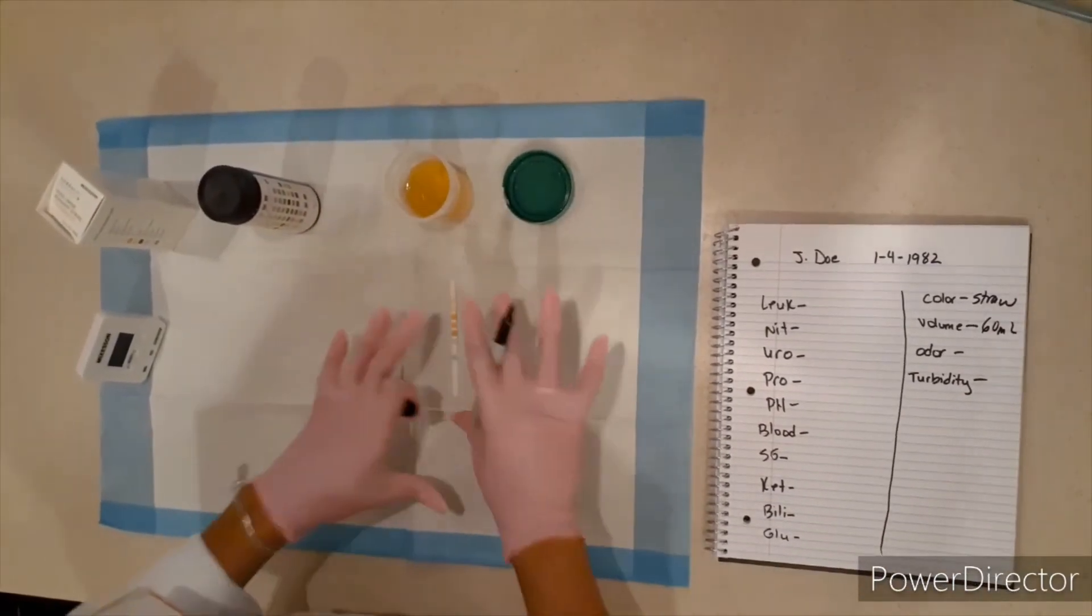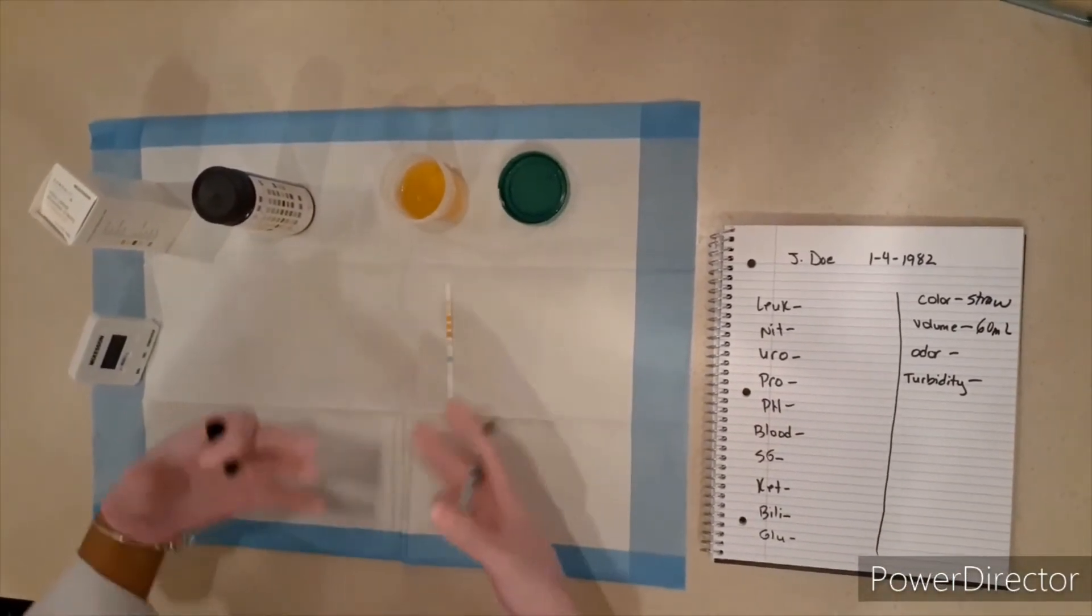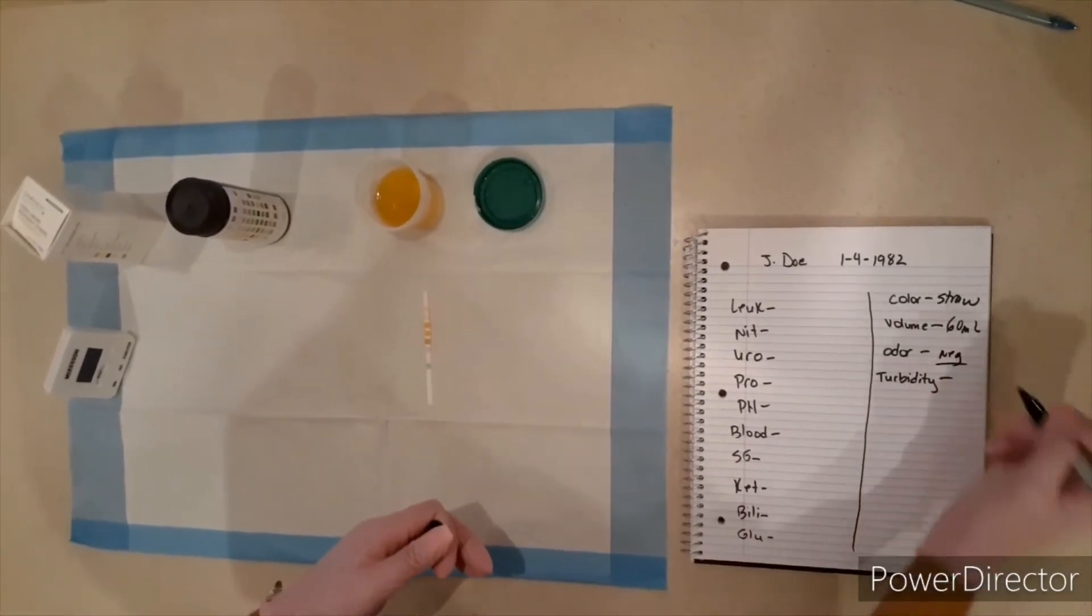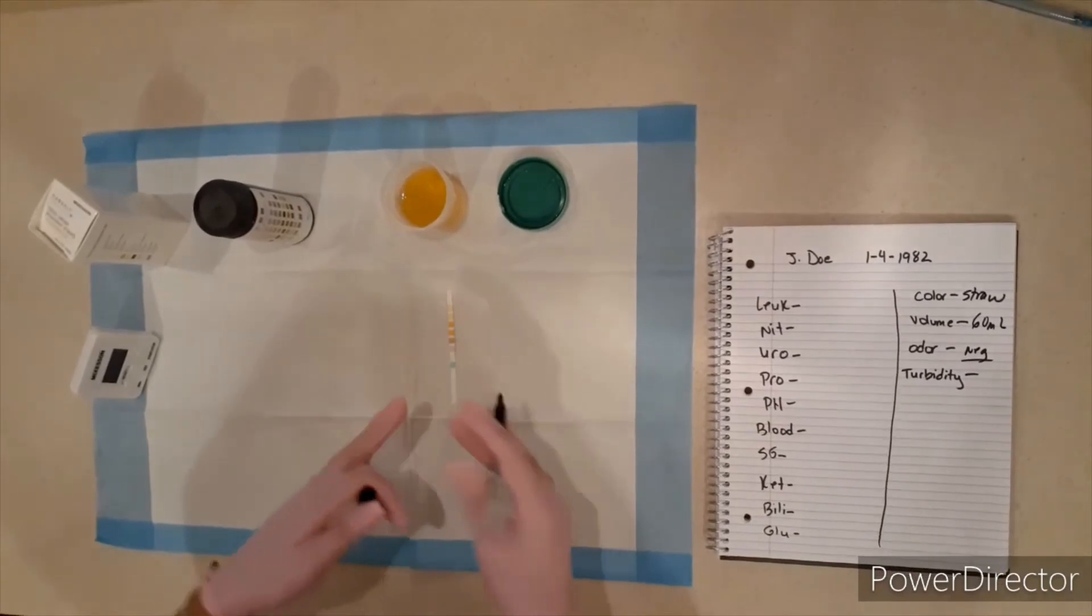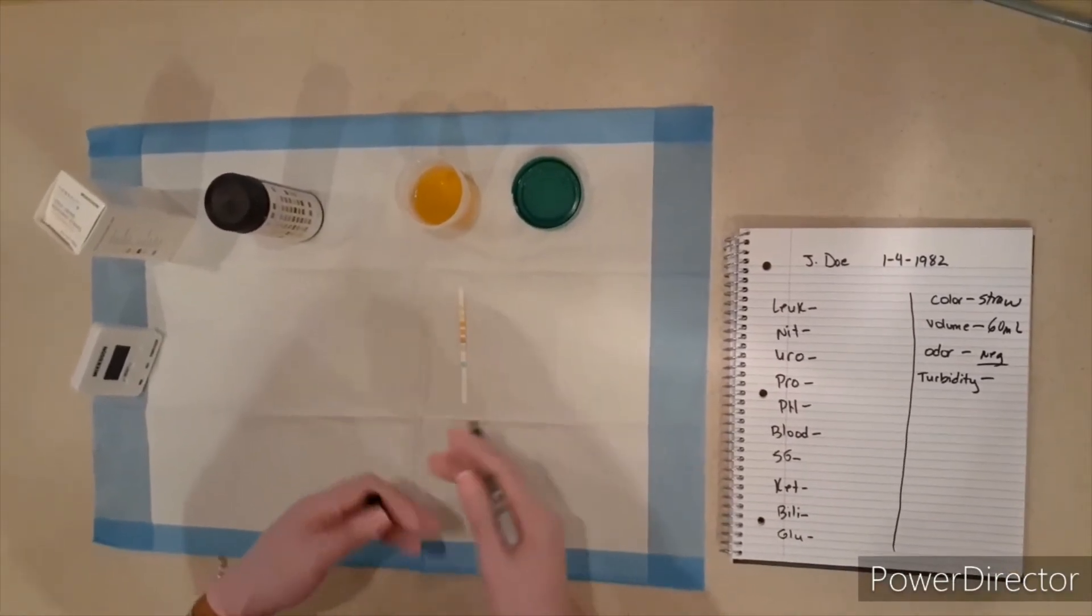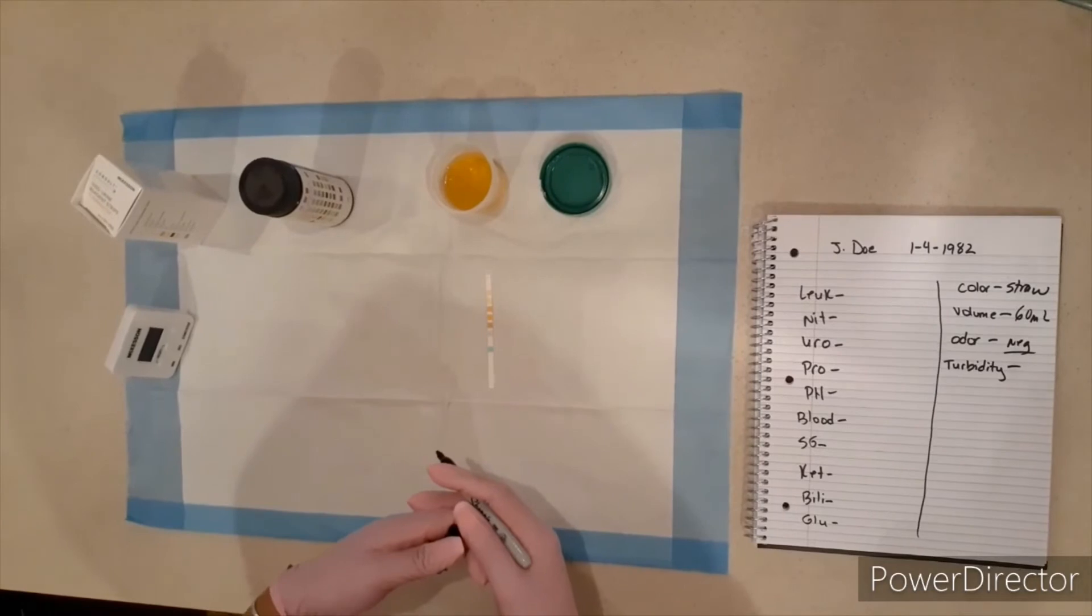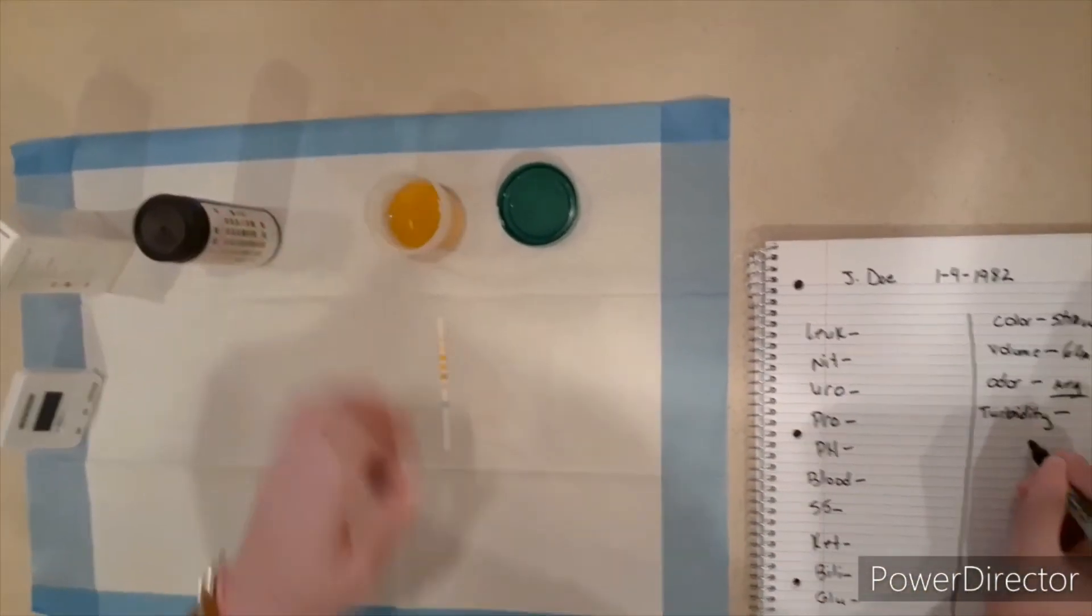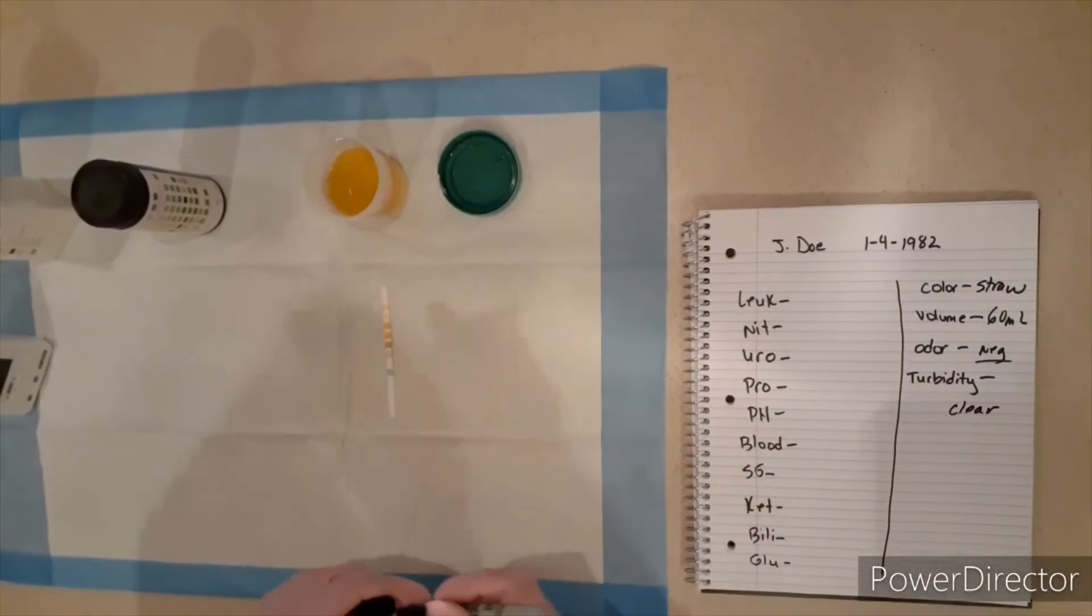When you first open the urine, if you notice any type of an odor that comes from the urine, you want to make sure you write that here. I wrote negative for odor because I don't smell anything unusual from the urine. Turbidity is something else that you can document, which is whether or not the urine is clear or cloudy. Here, our turbidity is clear.